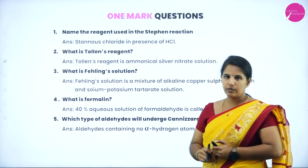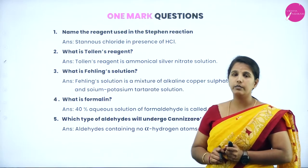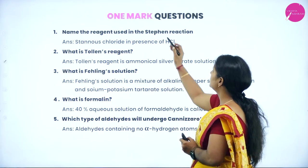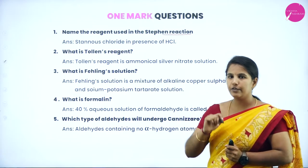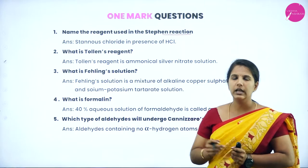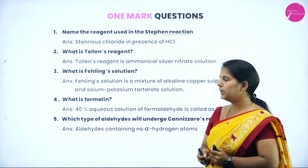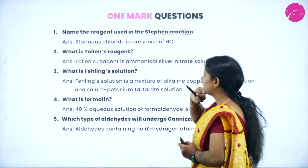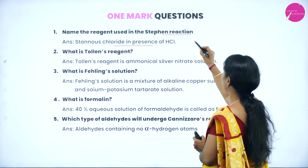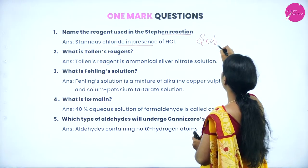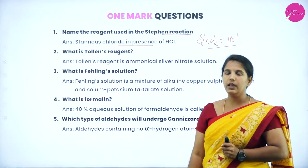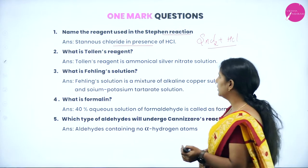We will see the types of one-mark questions which have been frequently asked from Aldehydes, Ketones, and Carboxylic Acids. Name the reagents used in Stephen reduction: stannous chloride in the presence of concentrated hydrochloric acid. So we are using stannous chloride with concentrated HCl — these are the main reagents used in Stephen reduction.